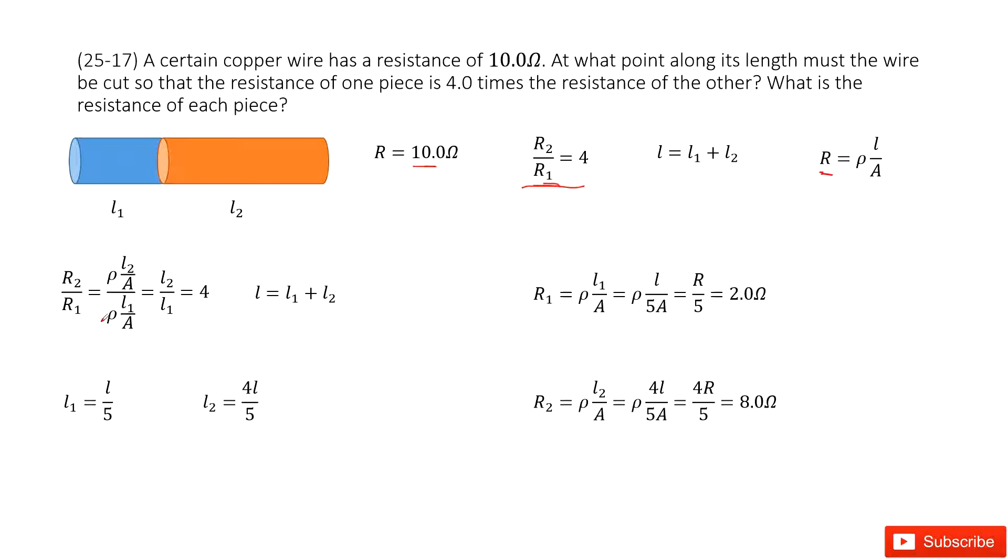R1 is ρ times L1 divided by A. This ρ depends on the material, copper, so they are constant and identical. L1 and L2 are different. A is the cross-sectional area; they must be equal because this is a wire cut at one point.